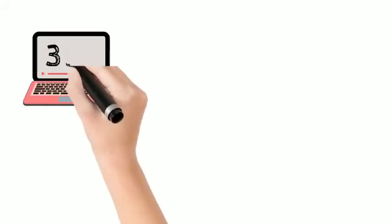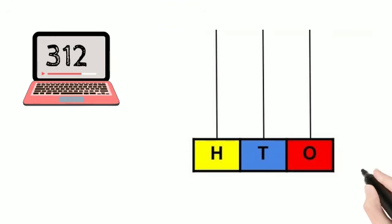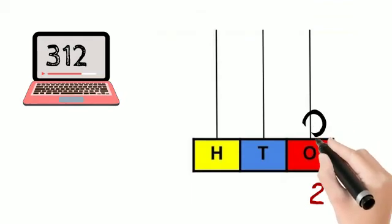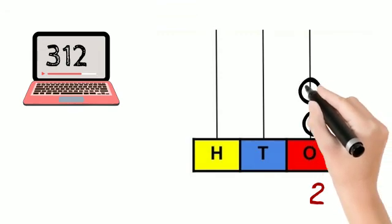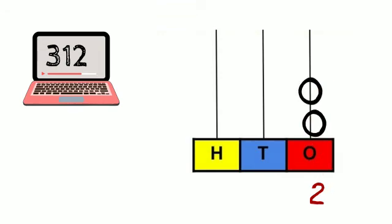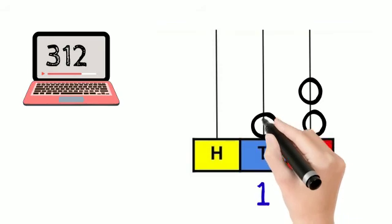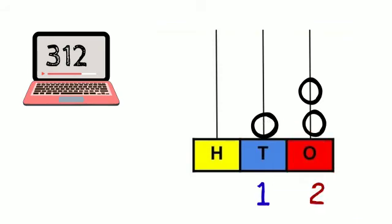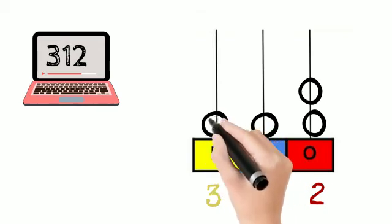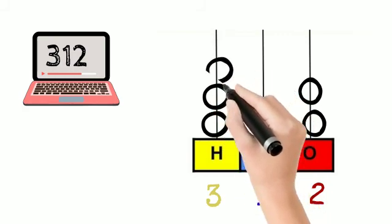So let's draw an abacus. Our first question: 312. For a 3 digit number we draw the abacus and place the beads. Starting from the left, the ones place digit is 2 — so draw 2 beads: 1, 2. The tens place digit is 1 — so draw 1 bead there. The hundreds place digit is 3 — so draw 3 beads: 1, 2, and 3. Good.